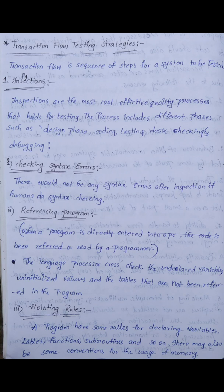A transaction is defined as this unique sequence of steps. Inspections are the most cost-effective process in software testing. We need to debug every phase — the design phase, coding phase, and testing phase. This checking at each phase makes the process cost-effective.